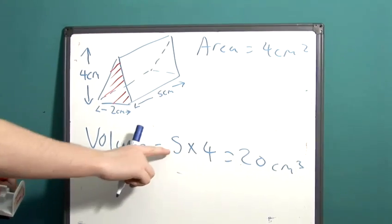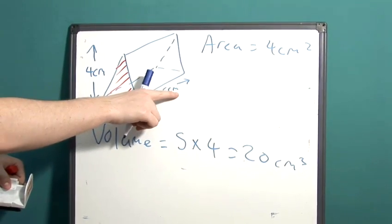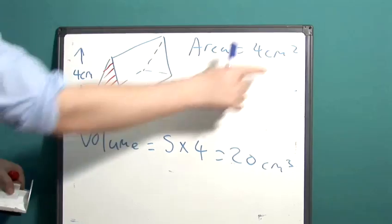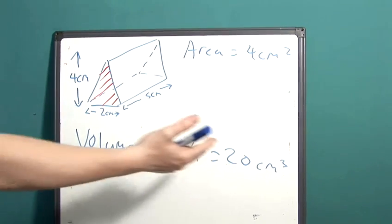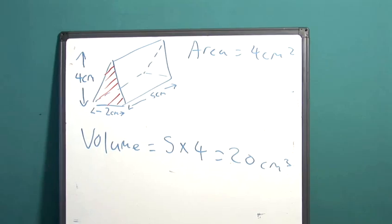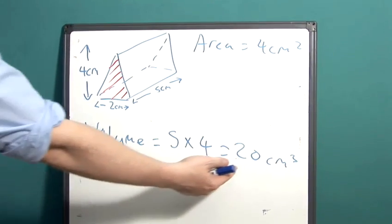Also a good way to remember is that here with five we're dealing with centimeters multiplied by centimeters squared with the four. Centimeters multiplied by centimeters squared, it's quite logical to see that it's centimeters cubed. And here we have our volume.